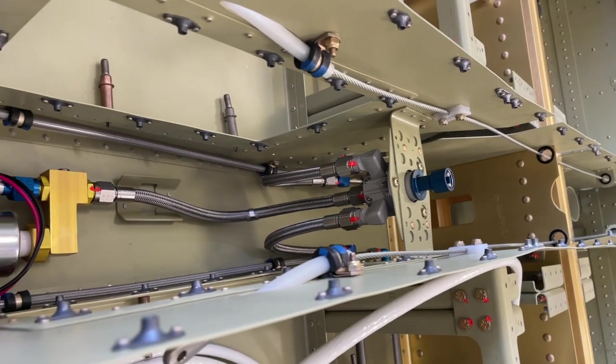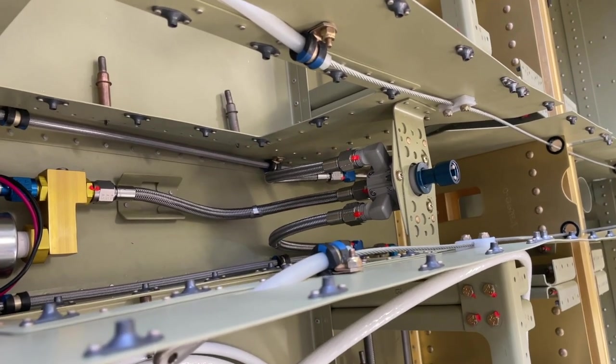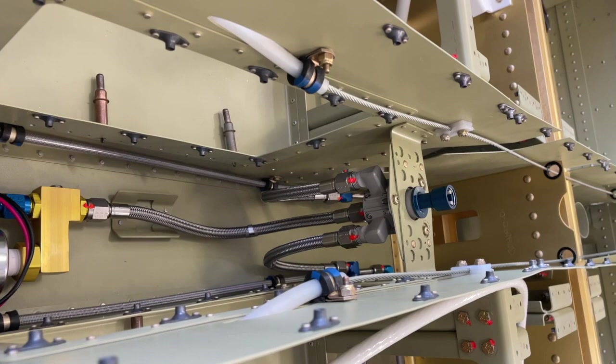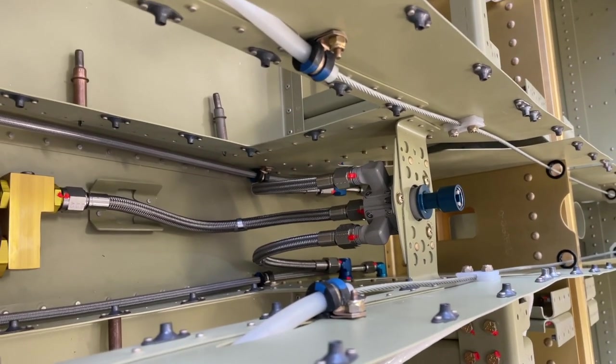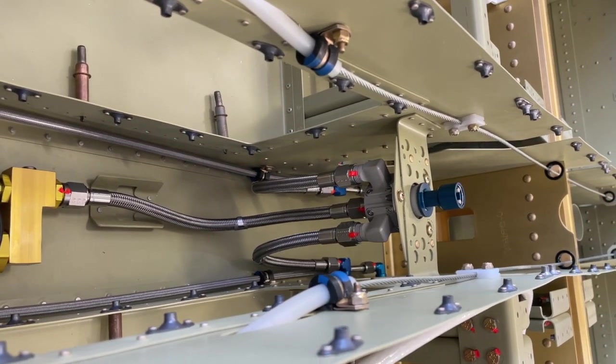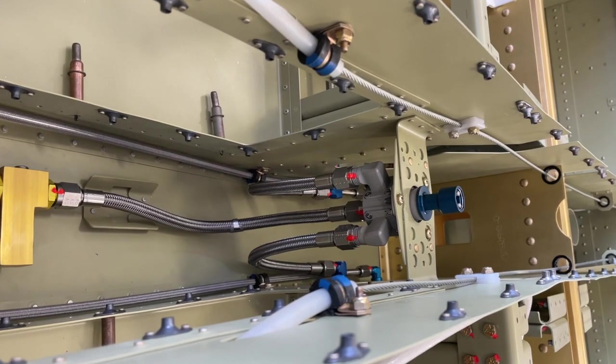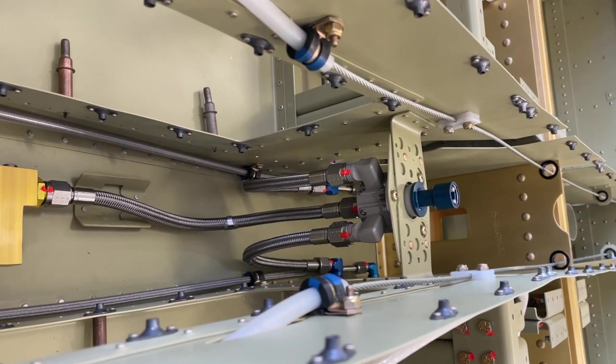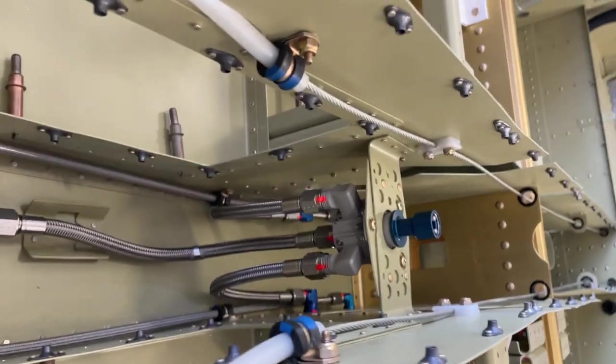Vans actually has the cheapest price on this valve. Aircraft Spruce, as of today, was almost $100 more. It's about a $250 valve. I think it makes a much nicer finished product than the brass valve that ships with the kit. I put the same valve in the RV9. It's great, highly recommended.